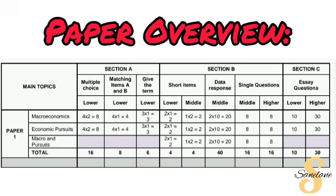Then we move on to Section B. In Section B we have three types of questions again. First, the short-term questions, which are the straightforward easy-mark questions — either two questions worth one mark each, or one question worth two marks. You will have two for macroeconomics, two for economic pursuits, and two that are mixed. Then we have the data response questions — these are where you answer based on a case study, a cartoon, or a graph. There are a number of questions under each data piece, totalling 20 marks across two data sets.